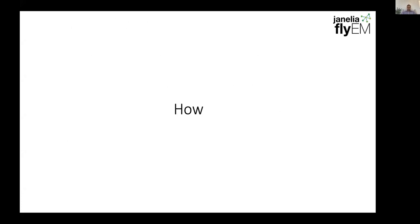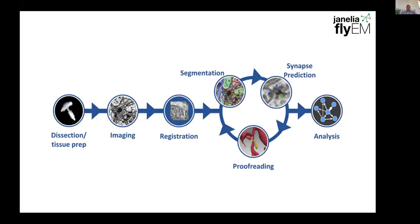How do we produce the dataset? For those familiar with EM connectomics, this is a relatively standard pipeline. The process has several stages, which is one reason we needed a project team — there are many aspects involving different expertise. We have a dissection and preparation part of the workflow, imaging using focused ion beam SEM, combining 2D snapshots into a 3D registered volume, then using automatic tools to segment the data into different neurons, automatically predict synapses, and then proofreaders or technicians go through to edit these various predictions iteratively, until eventually you have something you can analyze.